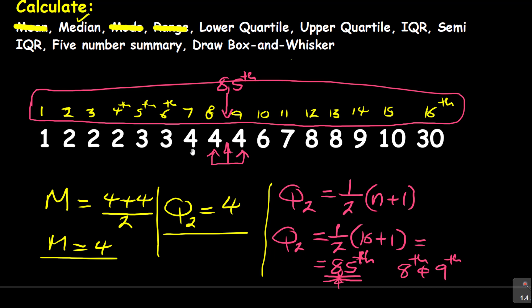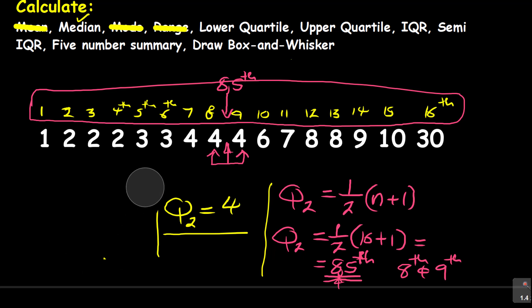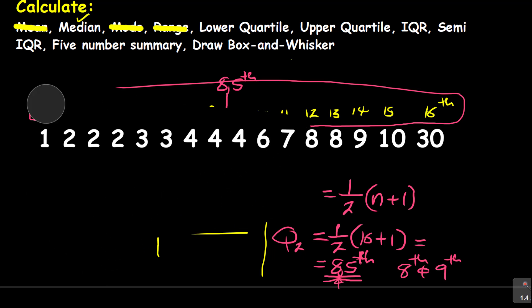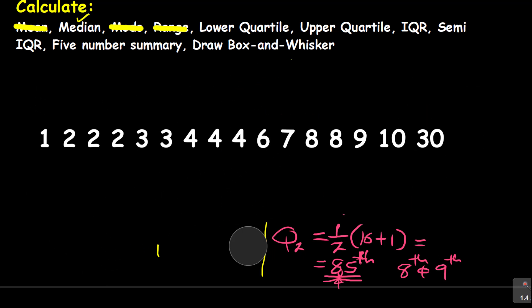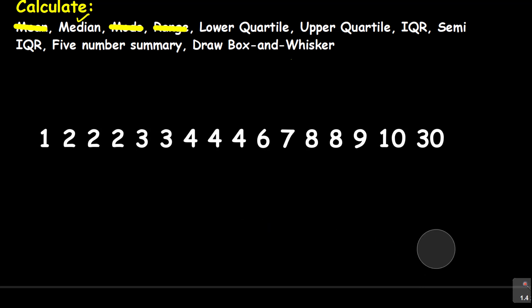I hope you guys mastered that. So I'm going to erase here. I've got my median — no problem. My median Q2 is equal to 4. I'm just going to write it somewhere here because I'm going to need that. So Q2 is equal to 4. Now the next part is the lower quartile.